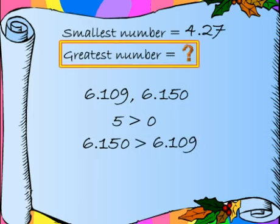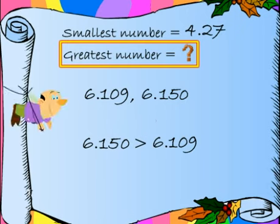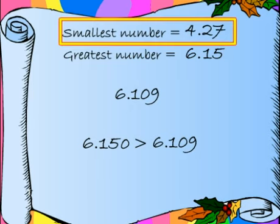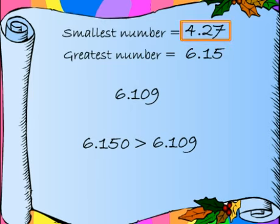So what is the greatest number among all the numbers? Yes, it's 6.150 or simply 6.15. And what was the smallest number? That was 4.27.